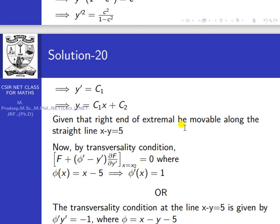Given that the right end of the extremal is movable along the straight line x − y = 5, we apply the transversality condition at x = x₂: f + (φ' − y')·∂f/∂y' = 0 at x = x₂, where φ(x) = x − 5, so y = x − 5 and φ'(x) = 1.